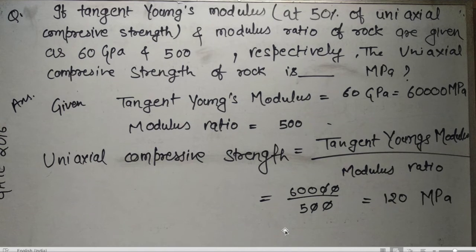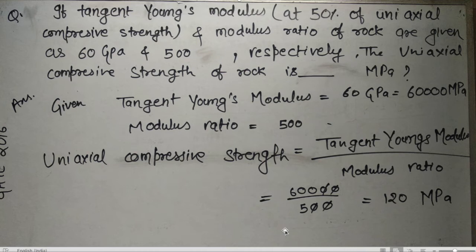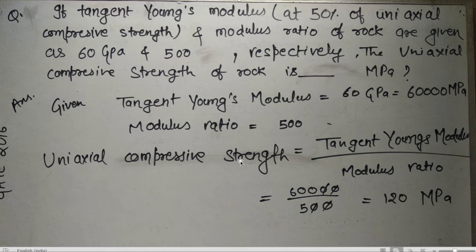Next question: the tangent Young's modulus at 50% of uniaxial compressive strength and the modulus ratio of a rock are 60 GPa and 500 respectively. We have to find the uniaxial compressive strength in MPa. Converting: 60 GPa = 60,000 MPa. The formula is: UCS = tangent Young's modulus / modulus ratio = 60,000 / 500 = 120 MPa.